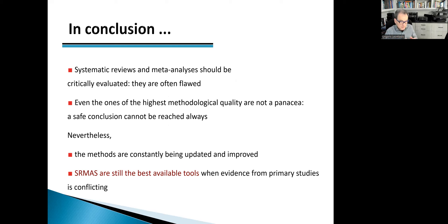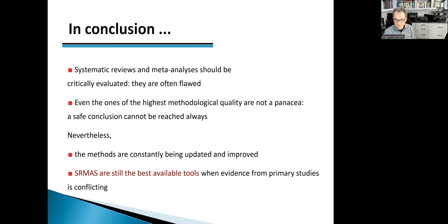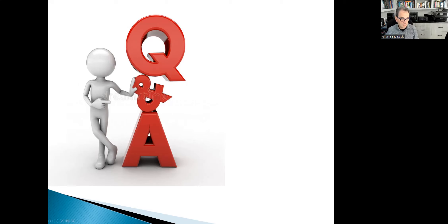In conclusion, systematic reviews and meta-analyses should be critically evaluated. They are often flawed, and even those of the highest methodological quality are not a panacea. Sometimes a safe conclusion cannot be reached, and that's okay. Despite these issues, the methods are constantly being improved, and even if they are not perfect, they're still the best tools we have nowadays. Thank you very much for your attention. I'm now ready for questions.